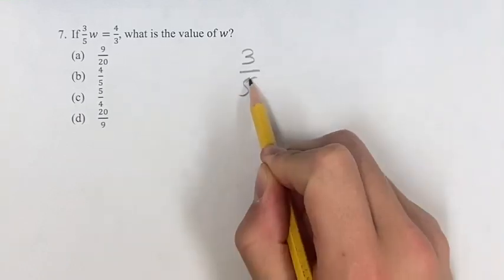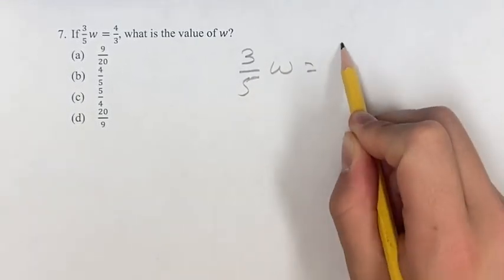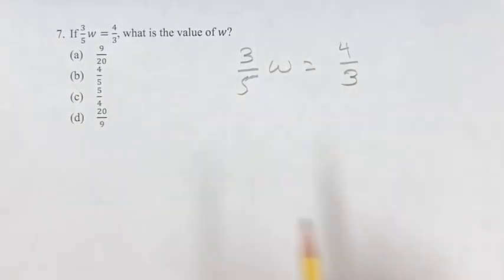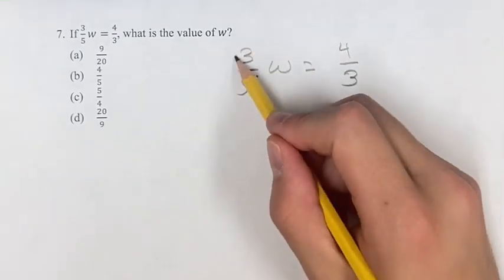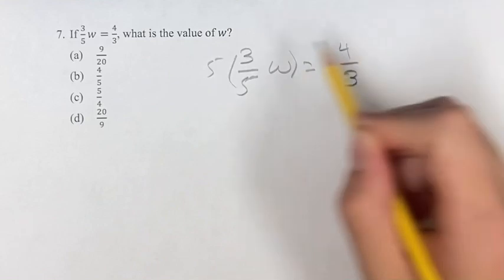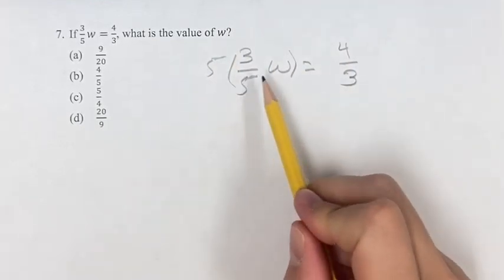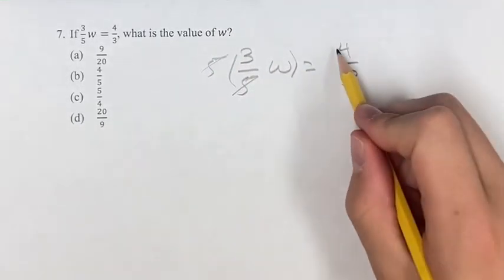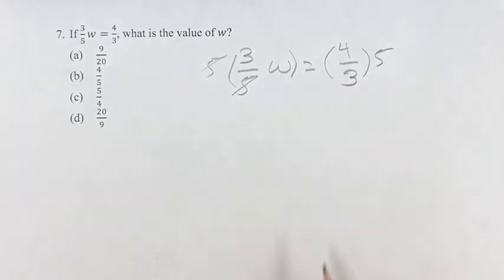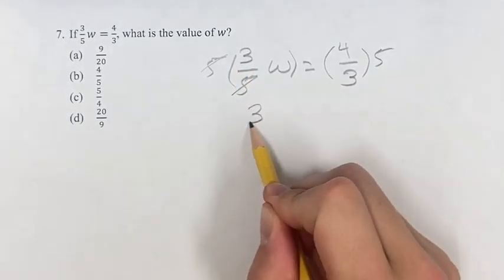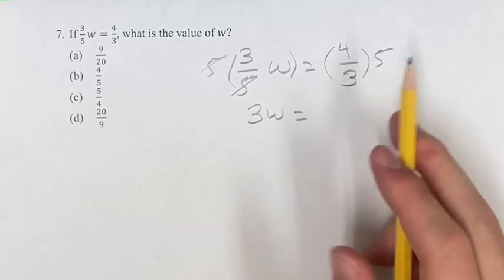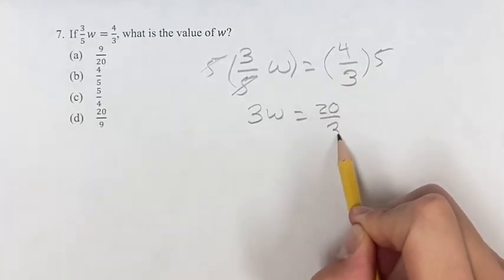So rewriting this equation right here, if you want to find the value of w, we have to get it alone. The first thing we can do is multiply both sides by five, then the five in the denominator here will cancel out. Of course, you have to multiply both sides by five. So on this side, we just have 3w left over, and then this is four times five is 20 over three.